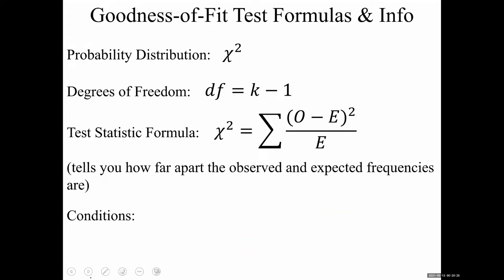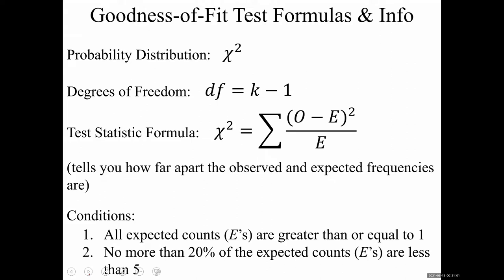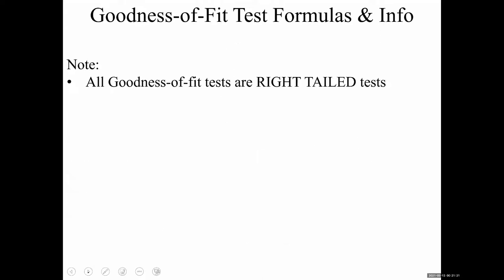There are conditions, though I won't ask you about them on the quiz. The conditions are on the expected frequencies: all expected frequencies must be greater than or equal to 1, and no more than 20% of the expected frequencies can be less than 5 — meaning at least 80% of expected frequencies must be bigger than 5. All goodness of fit tests are right-tailed.